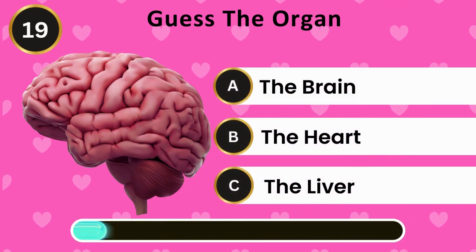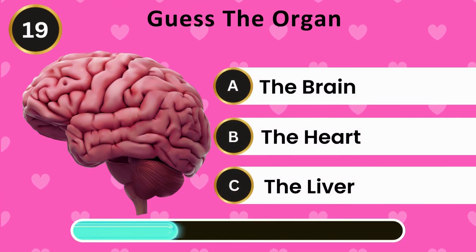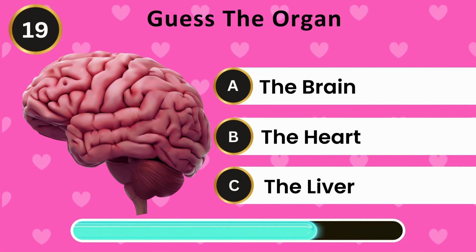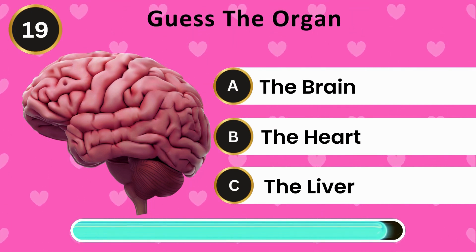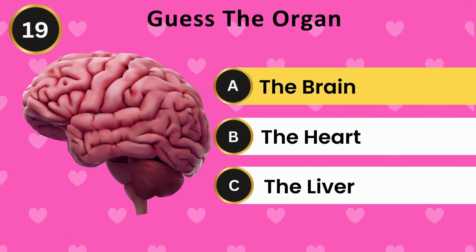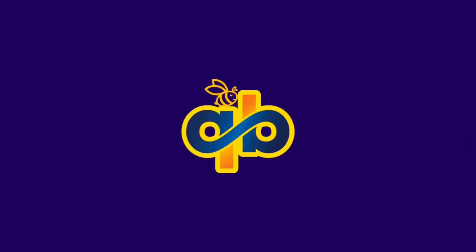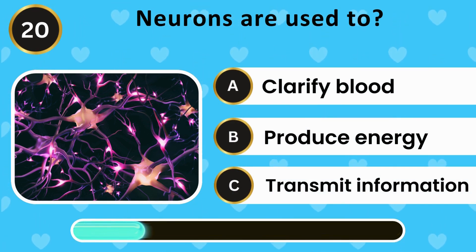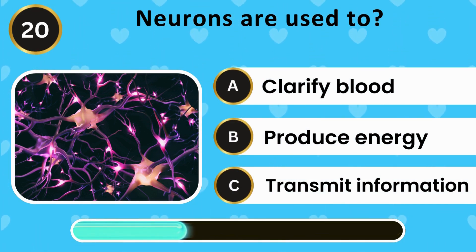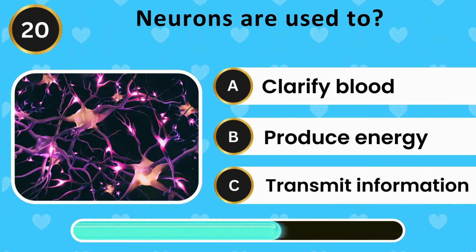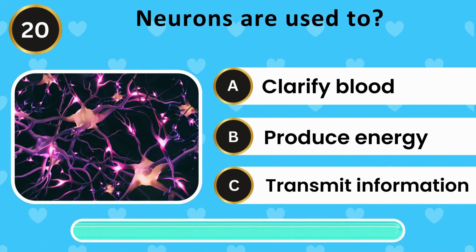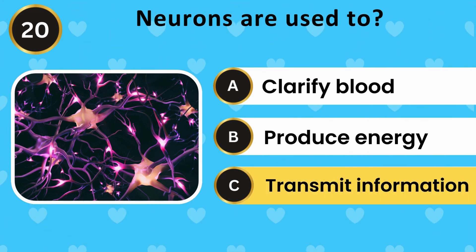Guess the organ: the brain, the heart, the liver. The answer is the brain. Neurons are used to: clarify blood, produce energy, transmit information. The answer is transmit information.